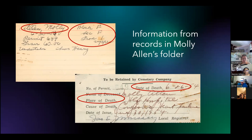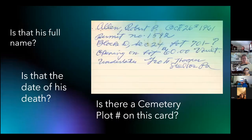Now let's look at one more folder — that of Robert Allen. Robert Allen's folder has three records: this index card and two others. Take a moment now to see if you can answer the first question at the top.